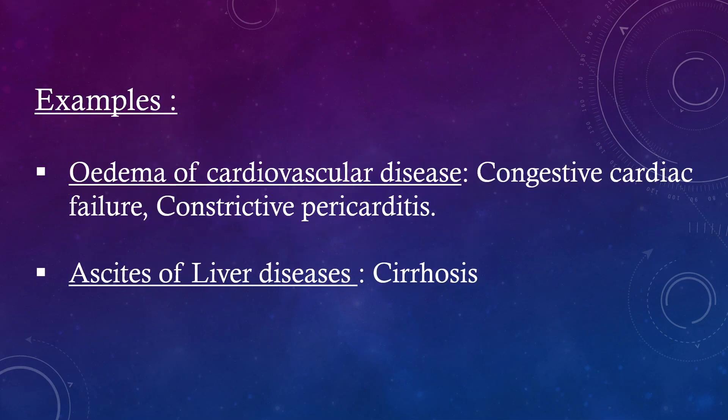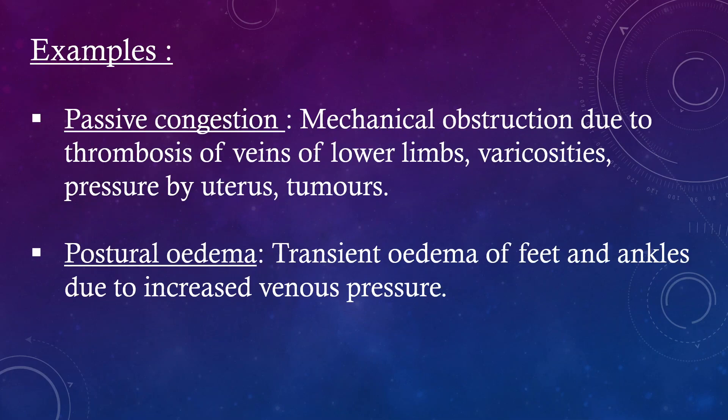Examples. Edema of cardiovascular disease: congestive cardiac failure and constrictive pericarditis. Ascites of liver disease: cirrhosis. Further examples include passive congestion; mechanical obstruction due to thrombosis of veins of the lower limbs; varicosities; pressure by the uterus or tumors; and postural edema — transient edema of feet and ankles due to increased venous pressure.